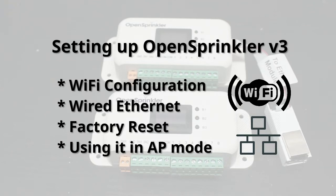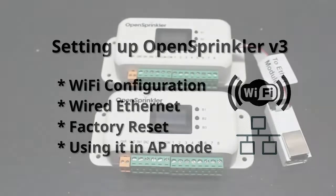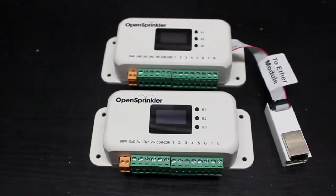Hi! In this video, I'll walk you through the steps to configure the Wi-Fi on OpenSprinkler V3 so that it can connect to your Wi-Fi router and you can start using it. I'll also show you how to use the wired Ethernet module if your OpenSprinkler comes with it. Finally, I will show you how to use OpenSprinkler in AP mode so you can use it even without internet.